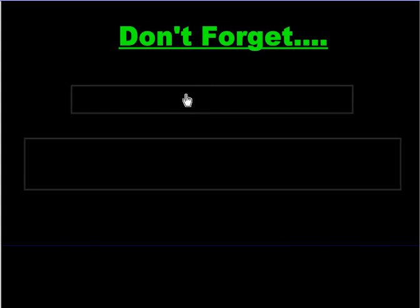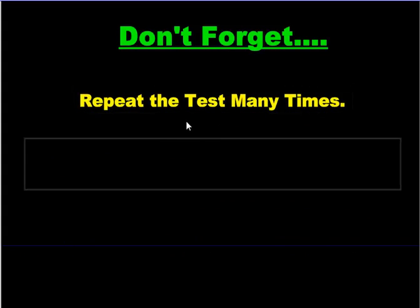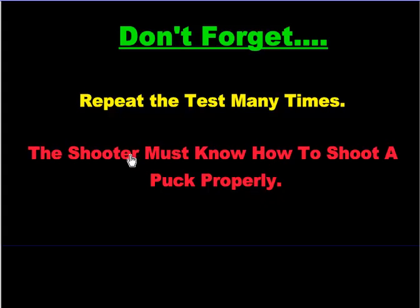You need to repeat the test many, many times. Don't do the experiment once because whichever stick wins, you might have just had a lucky shot. Do it over and over and over again until you're sure one of them is the winner. And even more importantly, make sure the shooter knows how to shoot a puck properly. If you get somebody who's never held a hockey stick or shot a puck to test those two sticks, he's not going to know how to use them — he probably won't generate a proper whipping action. You're not going to get good results. Make sure the shooter knows what he's doing.